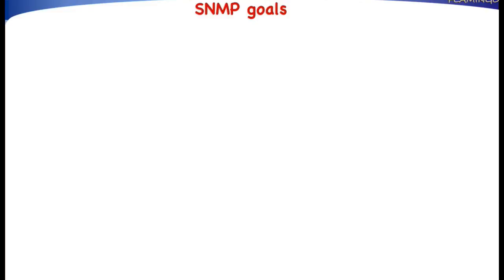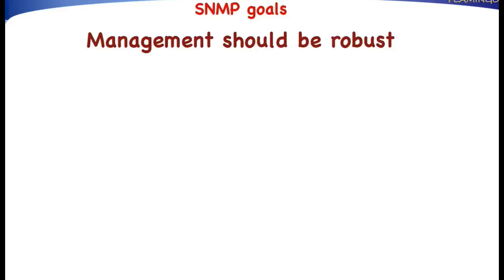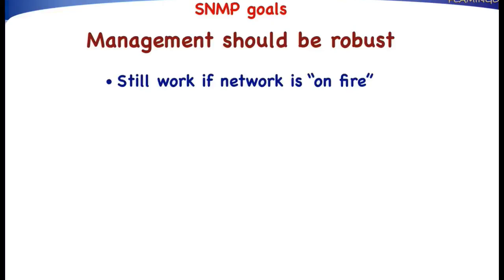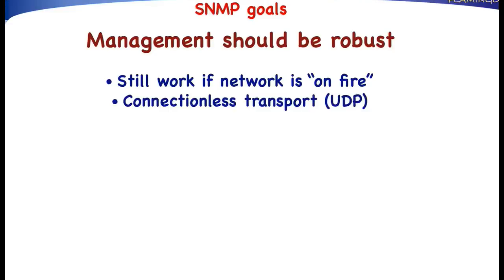The final goal the SNMP designers had in mind is that management should be robust. This means that network management should still function if the network is, between quotes, on fire. So even in situations where many things go wrong, the network manager should still have control of the network. For that reason, the designers of SNMP decided to run SNMP over the connectionless transport protocol, UDP. The idea was: if something goes wrong in the network, such as many packets getting lost, you can simply send the same management command many times, and at least one of these commands will then arrive at the agent system.